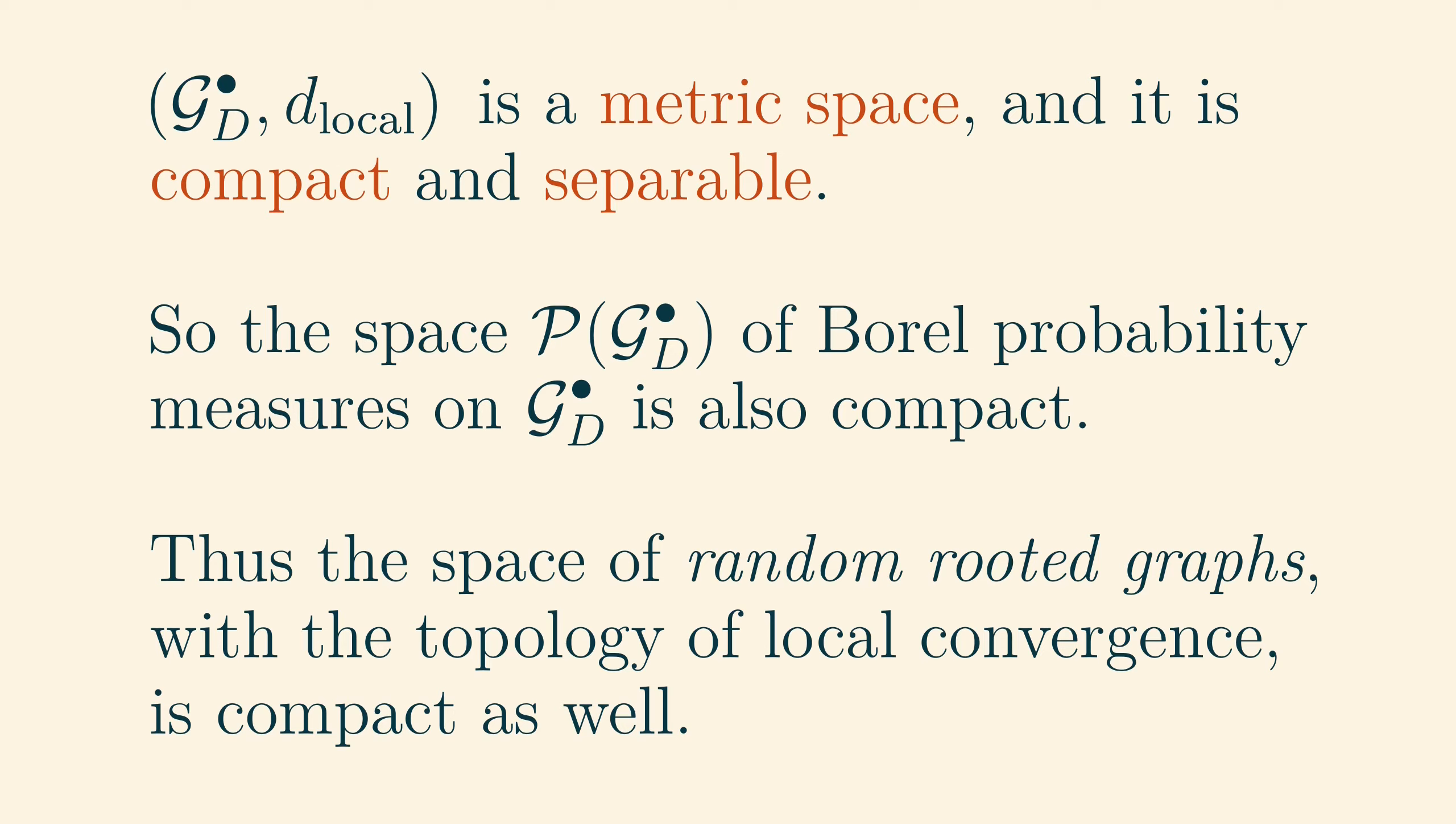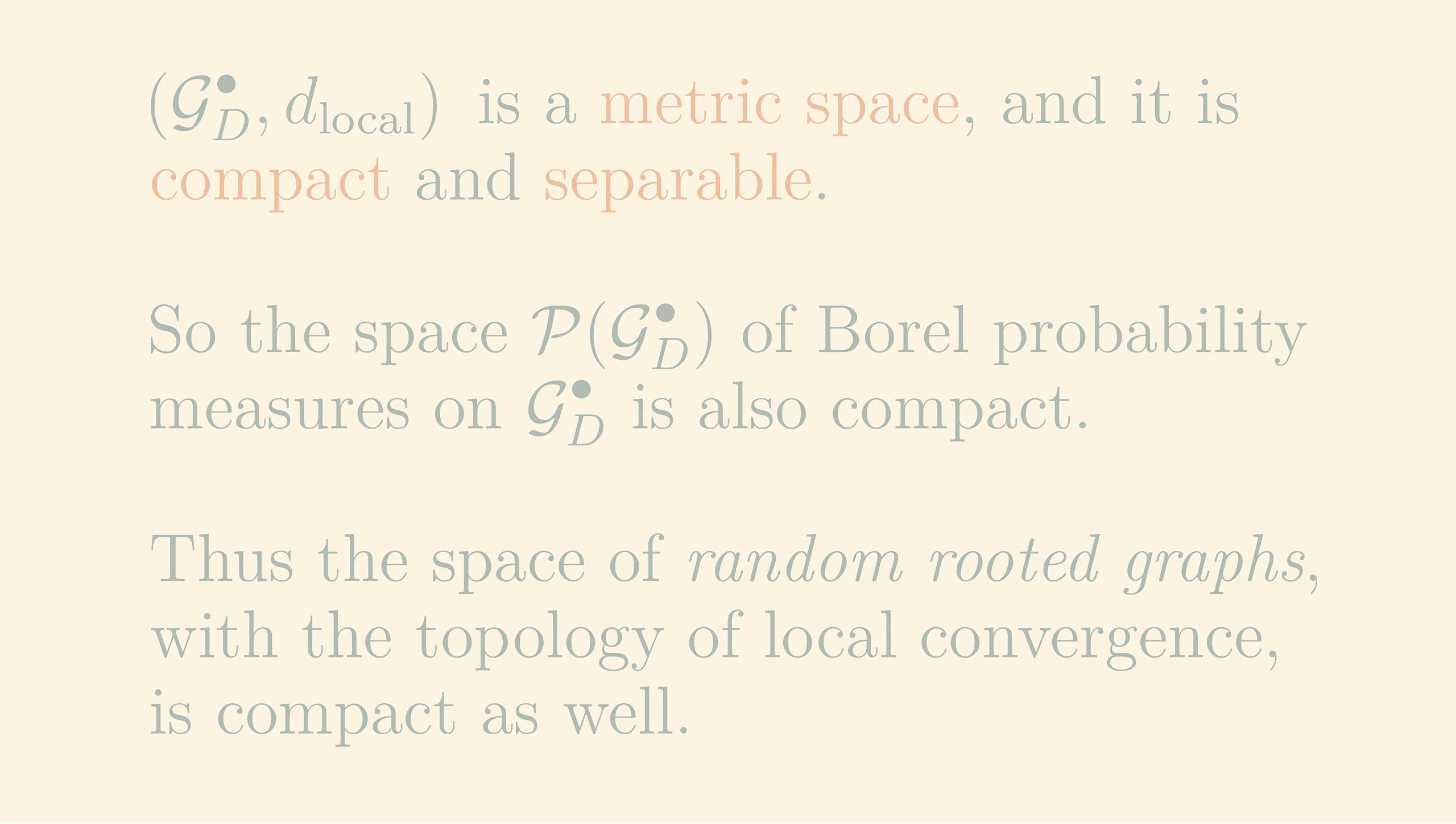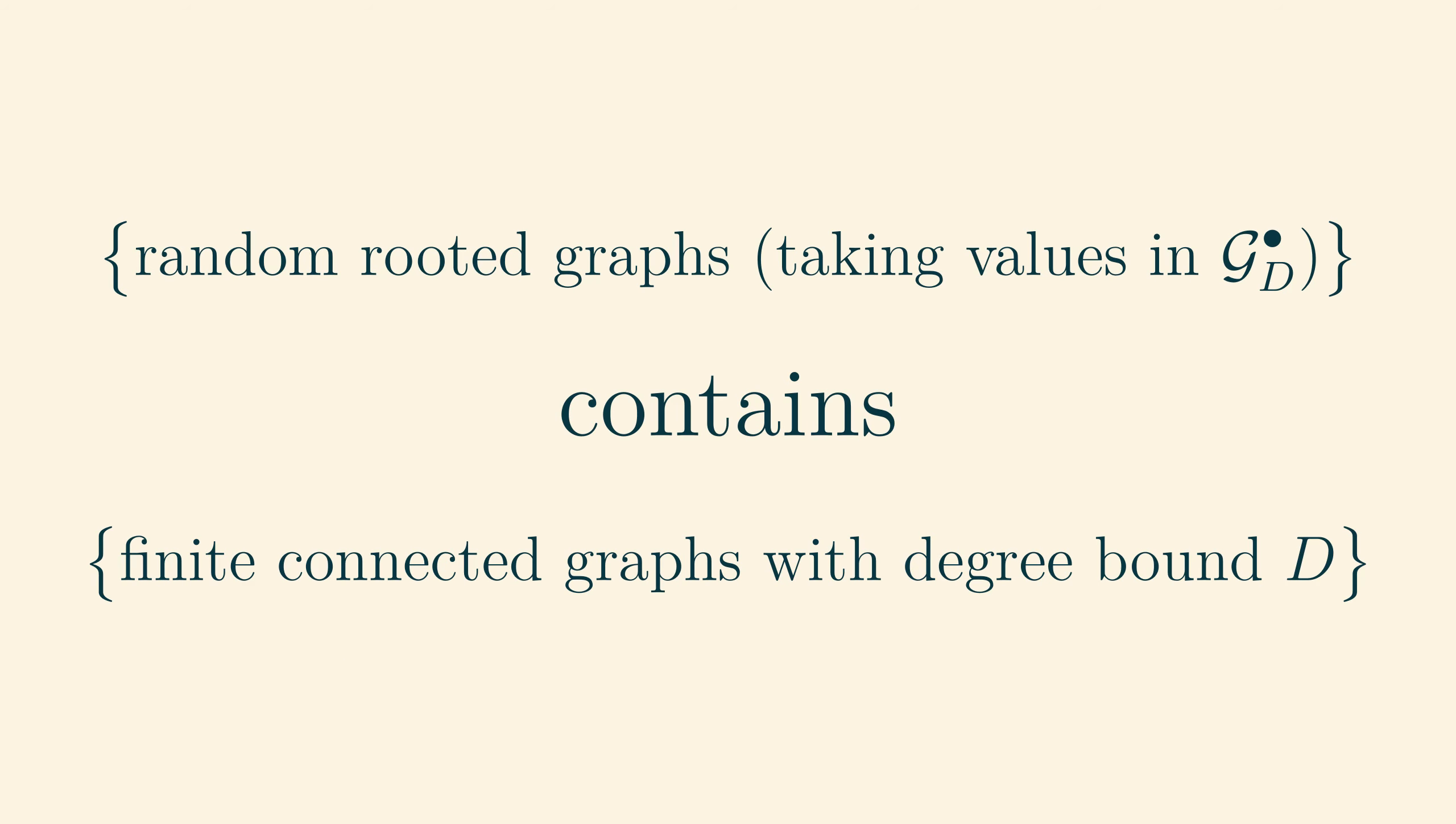Thus, every sequence of random rooted graphs has a subsequence which converges. In particular, if we consider any sequence of fixed unrooted graphs with uniformly bounded maximum degree, there is a subsequence which converges to some random rooted graph.